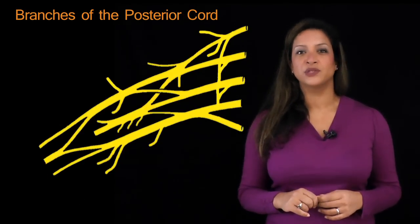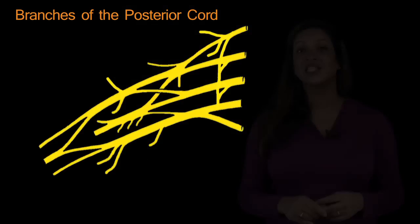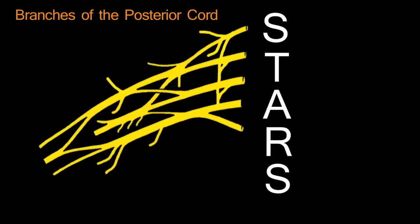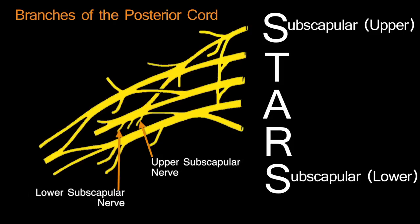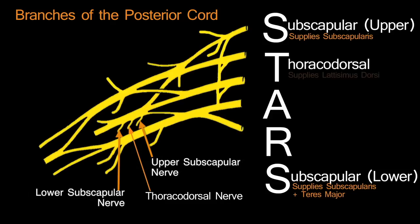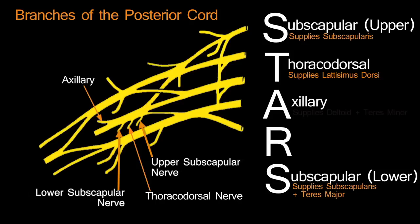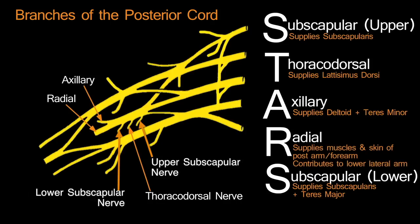There are five branches that come off the posterior cord. The mnemonic is STARS — S-T-A-R-S. STARS begins and ends with an S, reminding us of the upper and lower subscapular nerves, which supply subscapularis and teres major. T is for the thoracodorsal nerve, supplying latissimus dorsi. A is for the axillary nerve, supplying the deltoid and teres minor. R is for the radial nerve, which supplies all muscles in the posterior compartment of the arm and forearm, and contributes to the cutaneous supply of the posterior aspects of the arm, forearm, and hand.